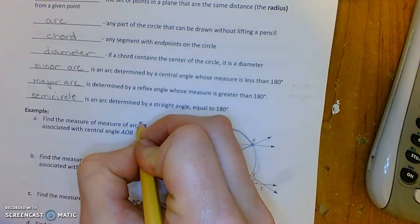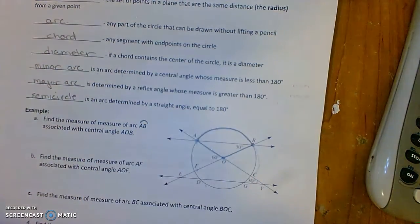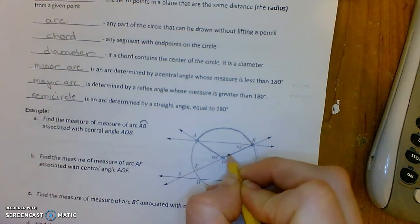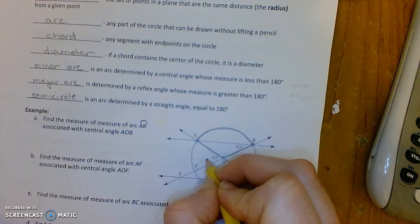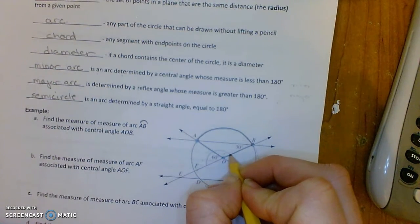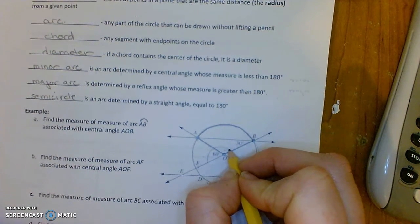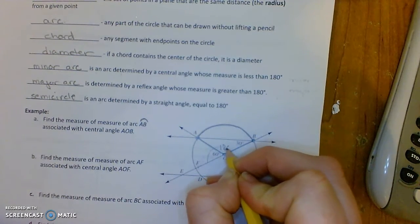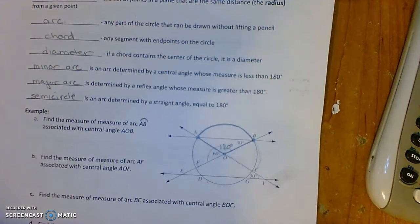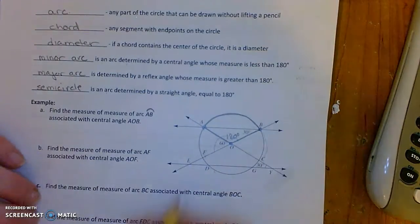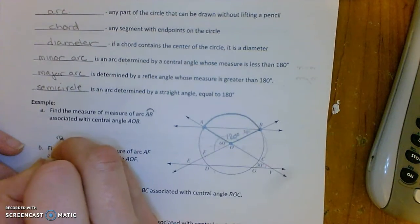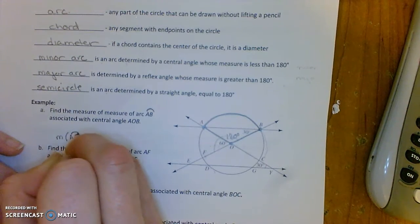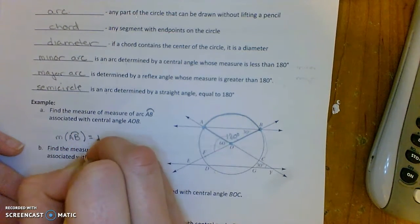So what's the measure of the arc? Draw this little symbol above AB. I need to know the measure of this angle here. So what I'm going to do is, I recognize that this is a straight line, 180 degrees. So 180 minus 60 is 120 degrees. Those two angles add up to a straight angle. So the measure of arc AB is 120 degrees.